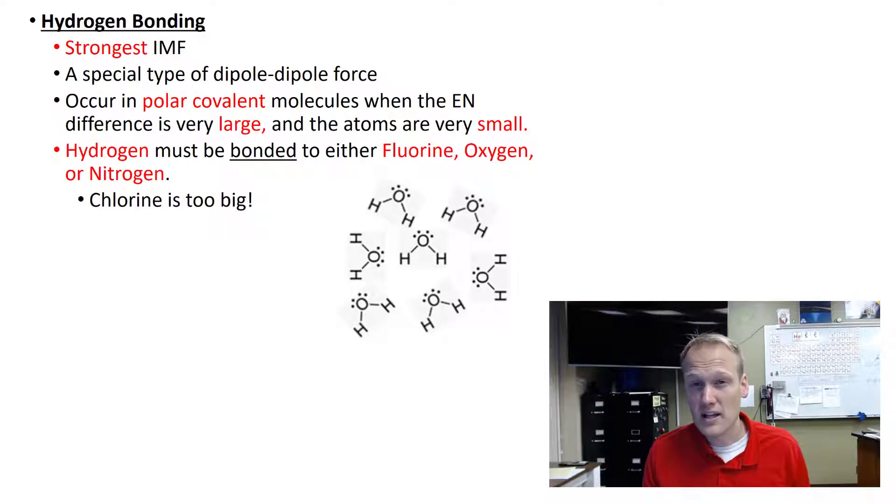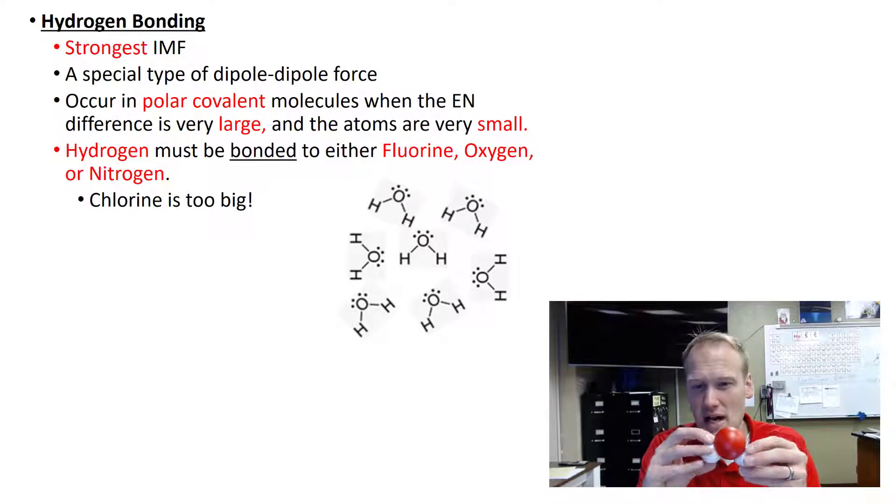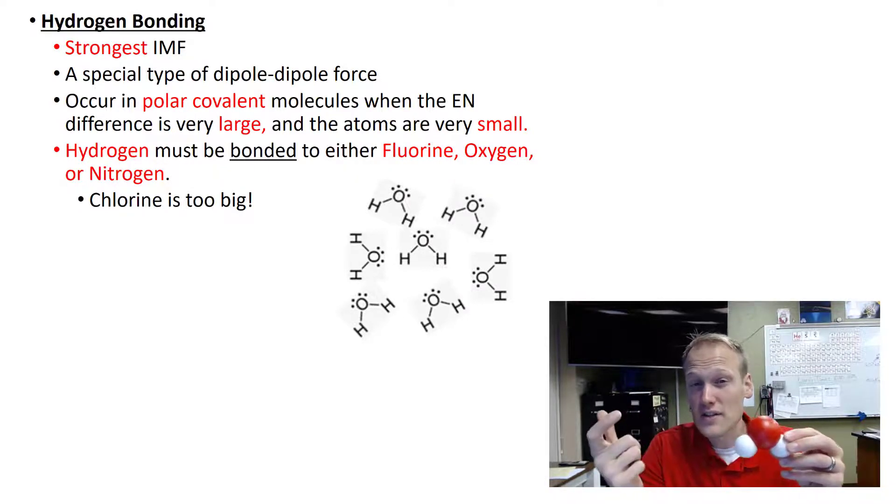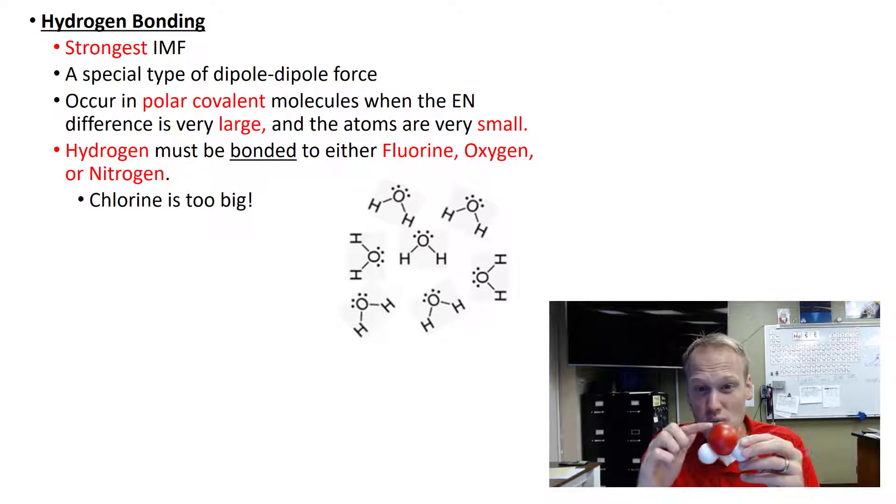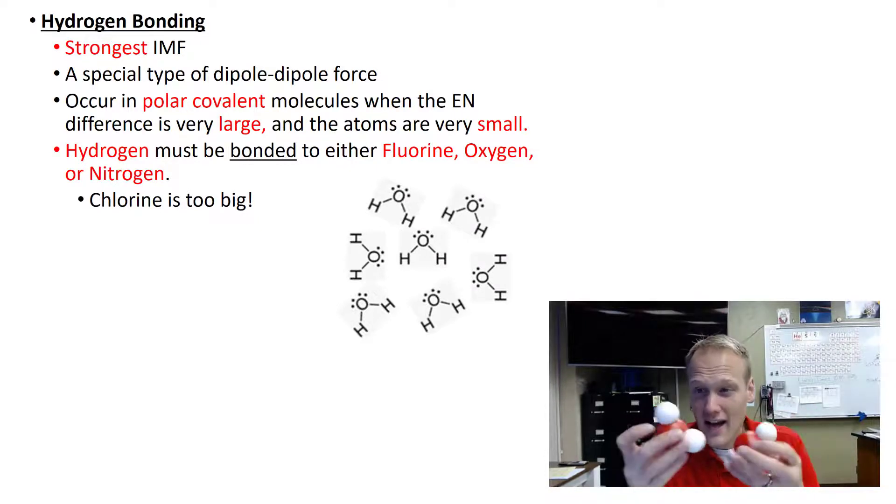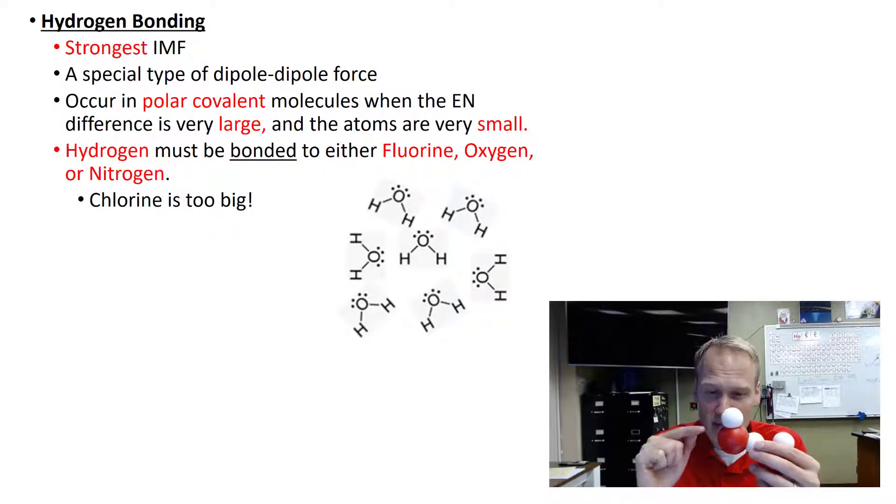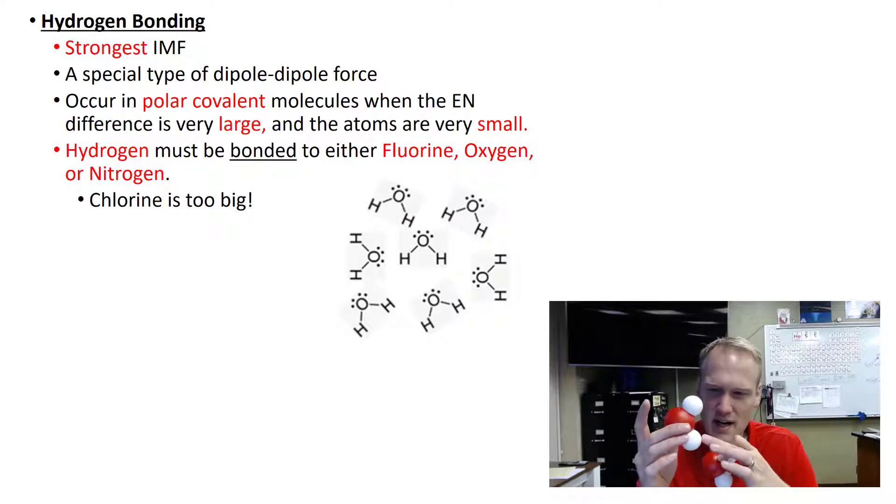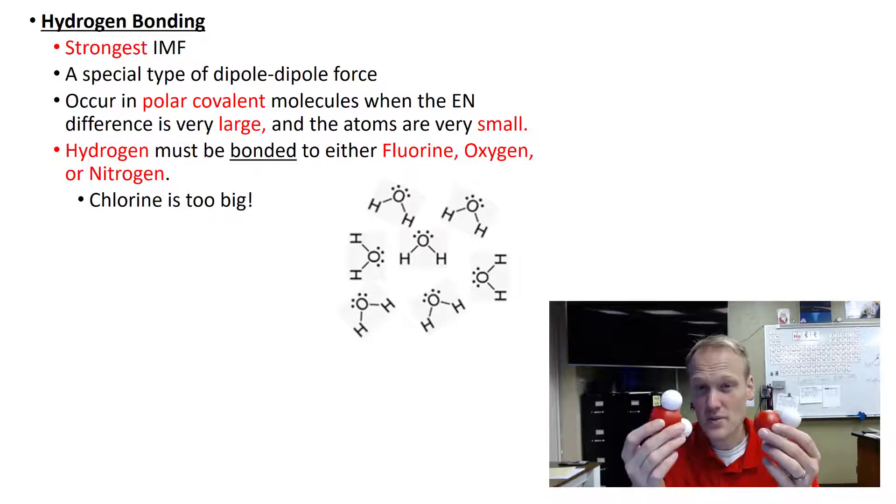The last type of intermolecular force is called hydrogen bonding. This is a really strong type of dipole-dipole. We're still dealing with polar molecules, but we have a really large electronegativity difference, which means hydrogen is either bonded to a fluorine, an oxygen, or a nitrogen. This gives us a really large difference in electronegativity and creates a really strong dipole. It's called hydrogen bonding because hydrogen is always involved. Water actually has hydrogen bonding because there's an oxygen bonded to a hydrogen. The negative end of one water will attract to the positive end to the other, and that's what we call hydrogen bonding.